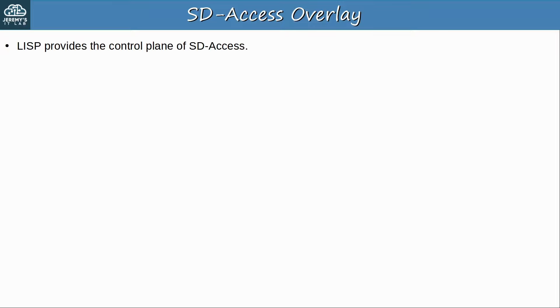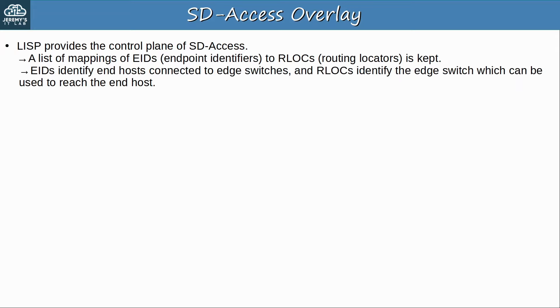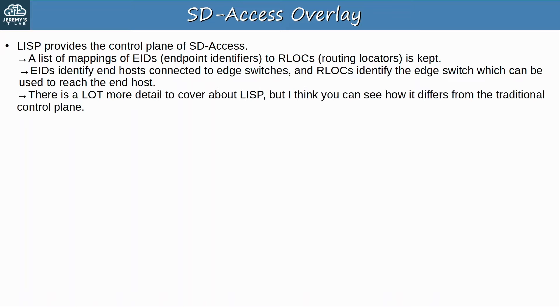Now let me briefly introduce a few aspects of the SD Access overlay. LISP provides the control plane of SD Access. A list of mappings of EIDs to RLOCs is kept. EIDs — endpoint identifiers — identify end hosts connected to edge switches, and RLOCs — routing locators — identify the edge switch which can be used to reach the end host. Instead of a traditional routing table to locate destination hosts, a DNS-like system of mappings is used.